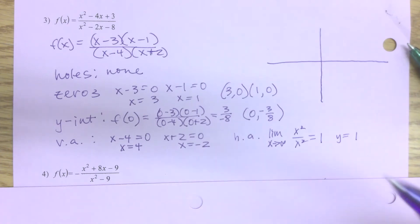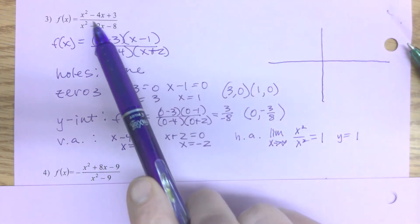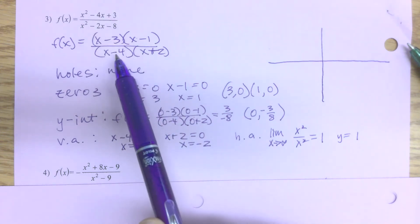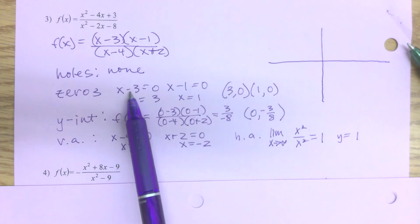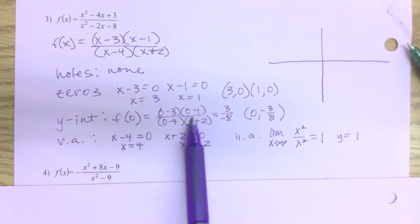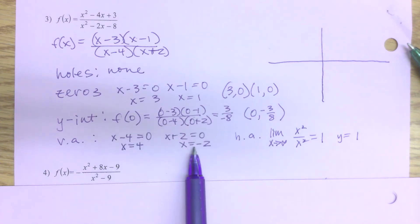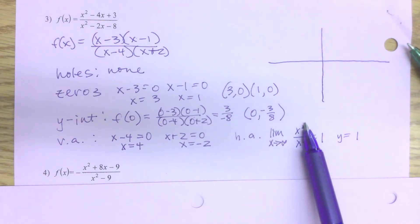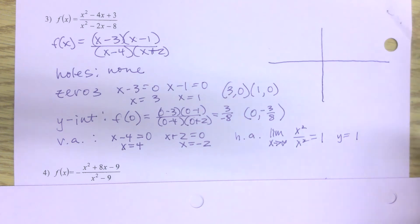Welcome back. I hope you gave it a try. Here's what I did: I factored it — two numbers that multiply to positive 3 and add to negative 4 gives (x - 3)(x - 1). Two numbers that multiply to negative 8 and add to negative 2 gives -4 and 2. There were no common factors, so no holes. I found my zeros by setting the numerator equal to zero: x = 3 and x = 1. I found my y-intercept by plugging in zero for x, getting -3/8. I found my vertical asymptotes at x = 4 and x = -2, and my horizontal asymptote: the lead terms are x² over x², which reduces to 1, so y = 1.